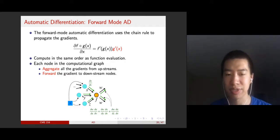You can see it has three upstream nodes and the gradients ∂x/∂v, where v is the primitive variable, and ∂y/∂v and ∂z/∂v. It aggregates all the gradients from those upstreams, then forwards the gradients to downstreams. This is the chain rule.